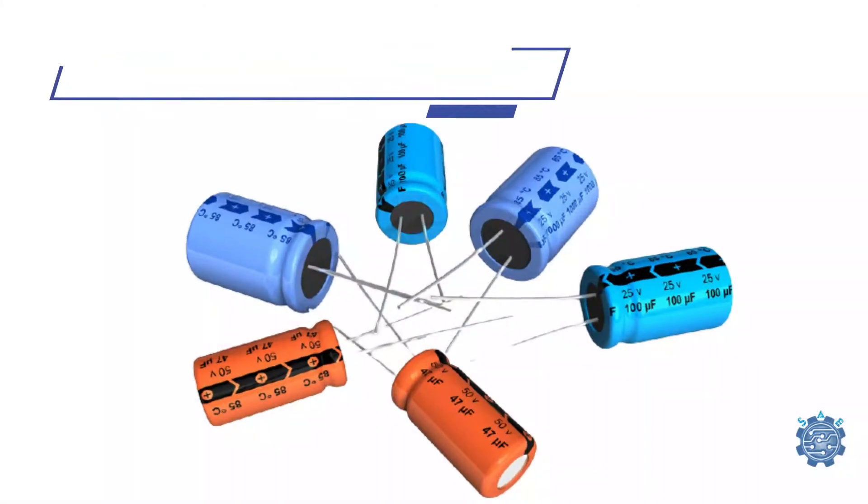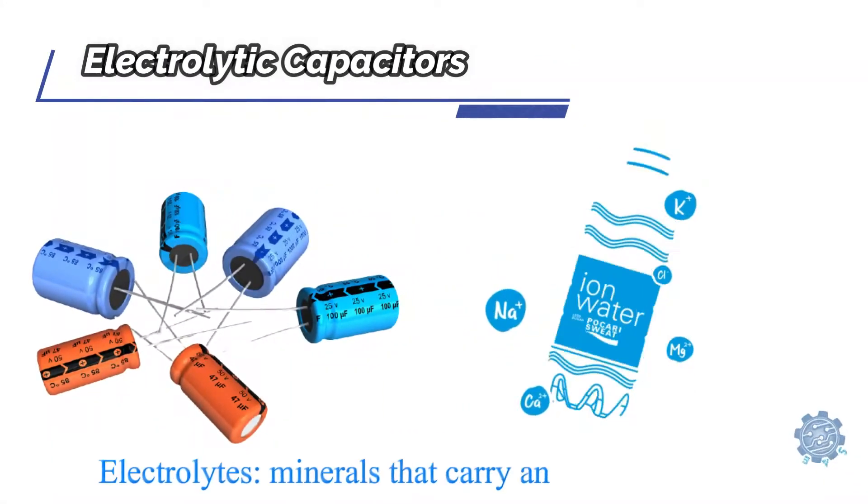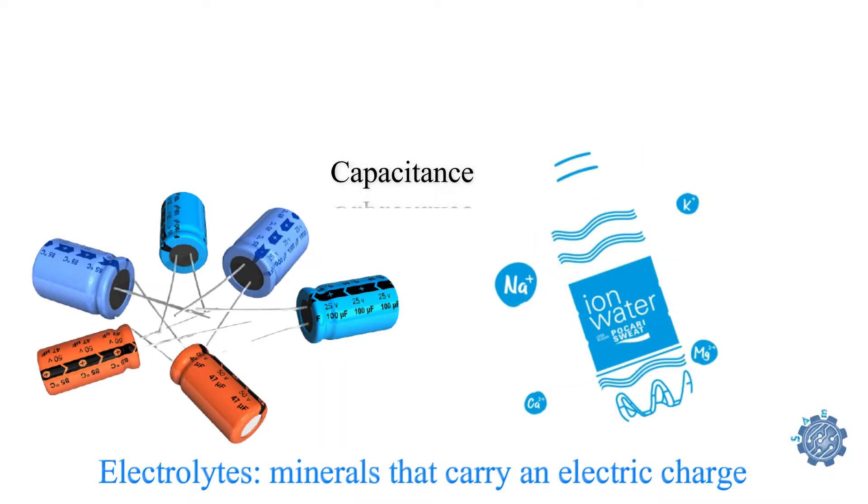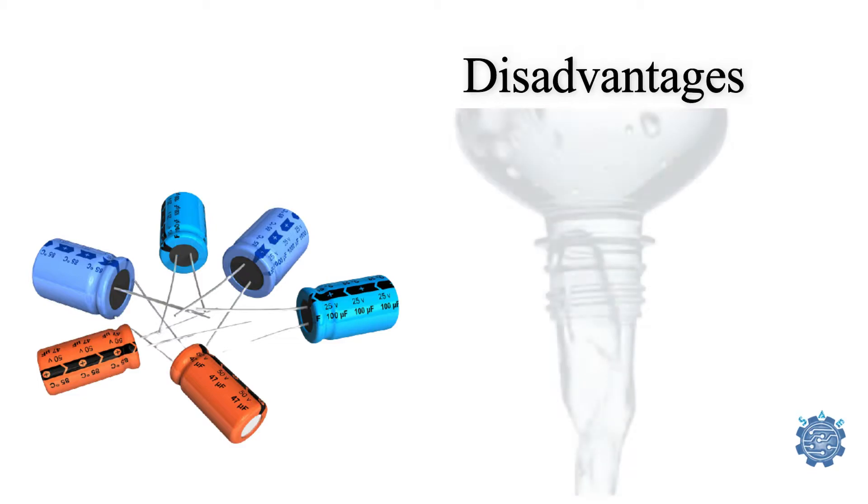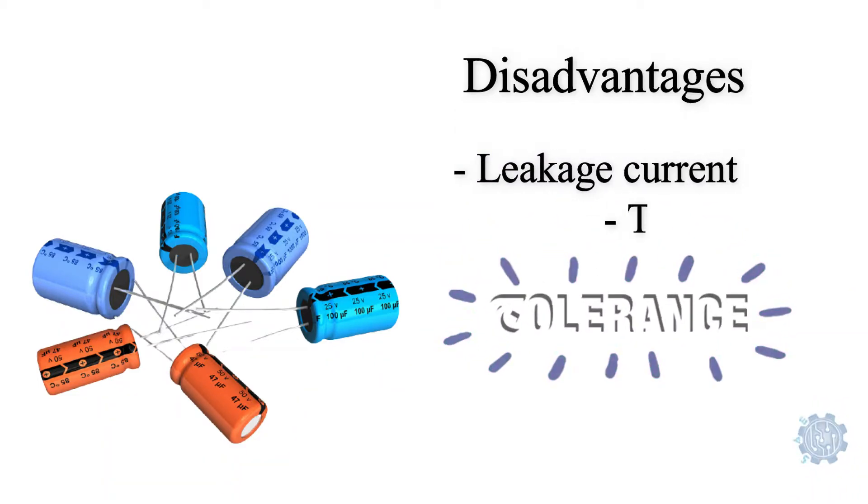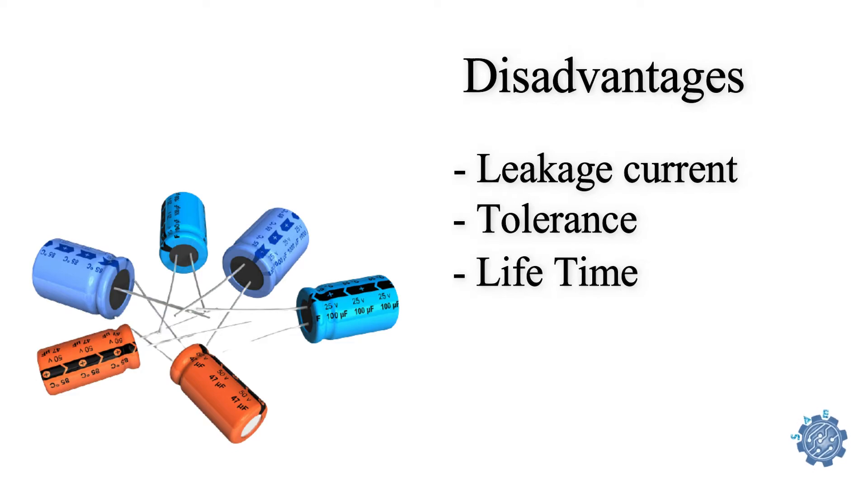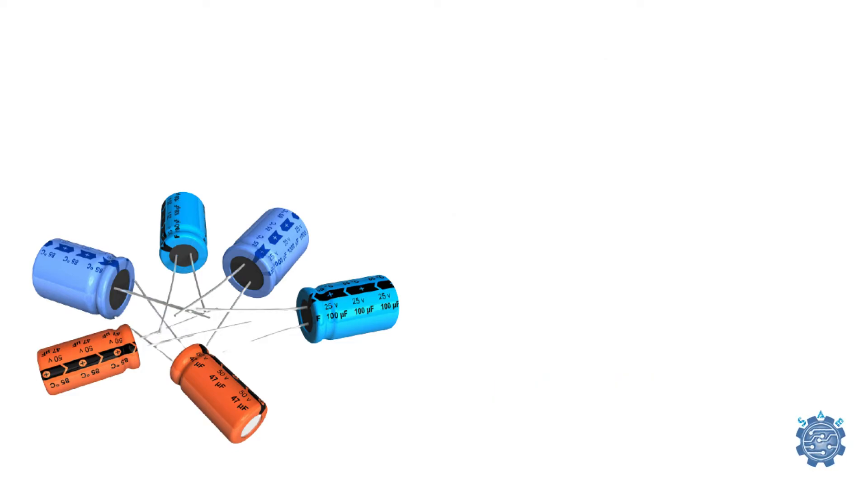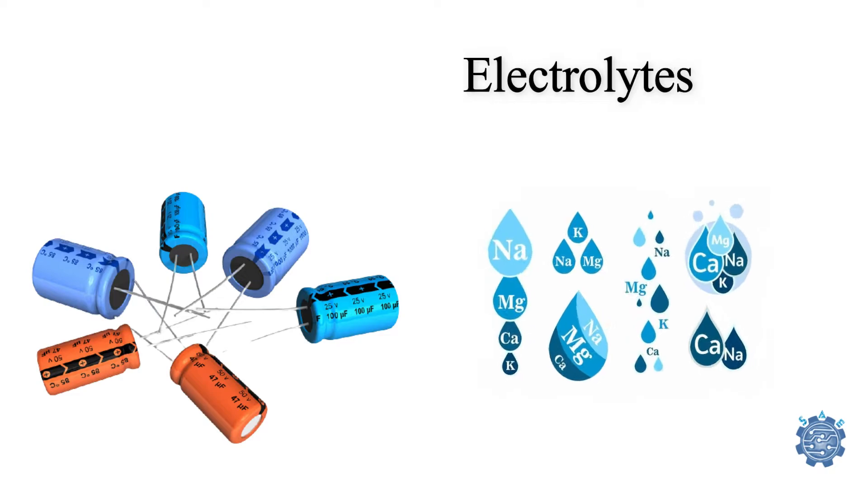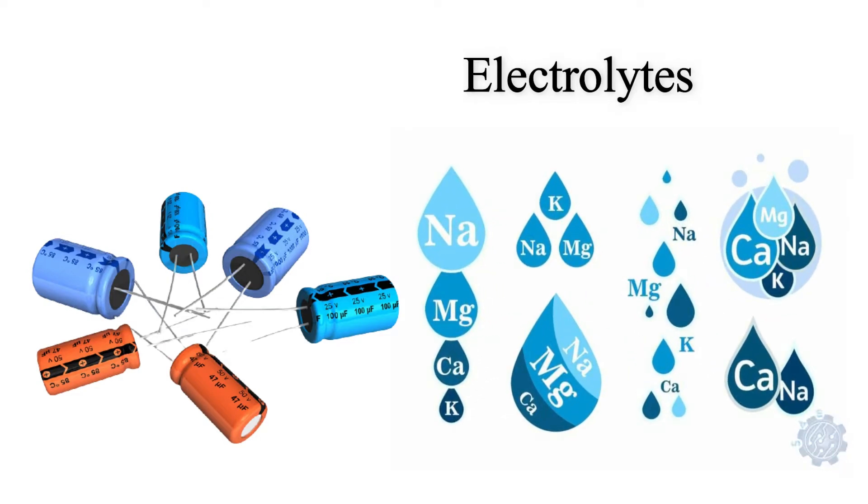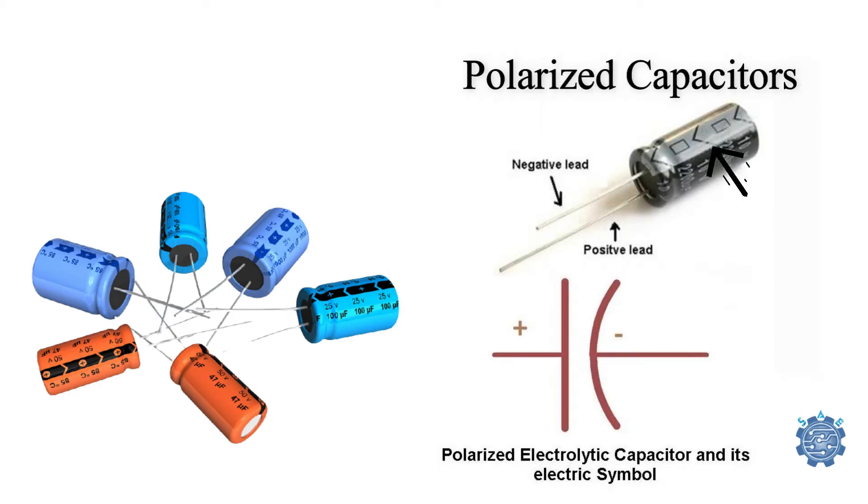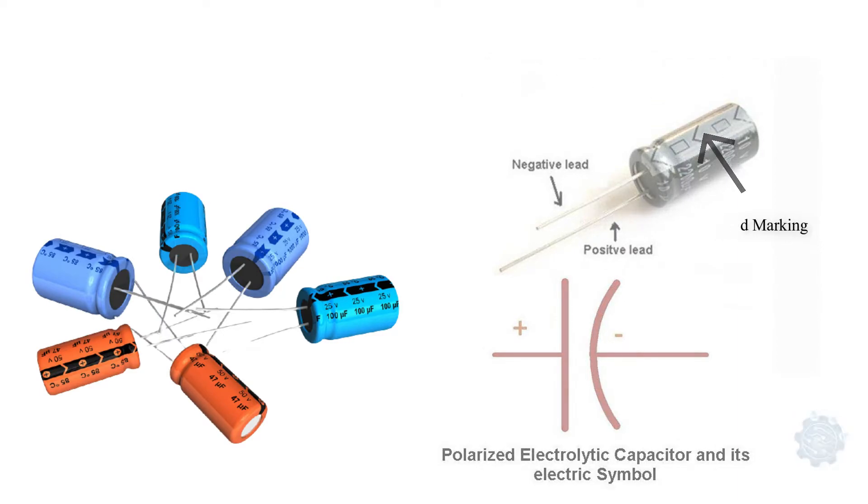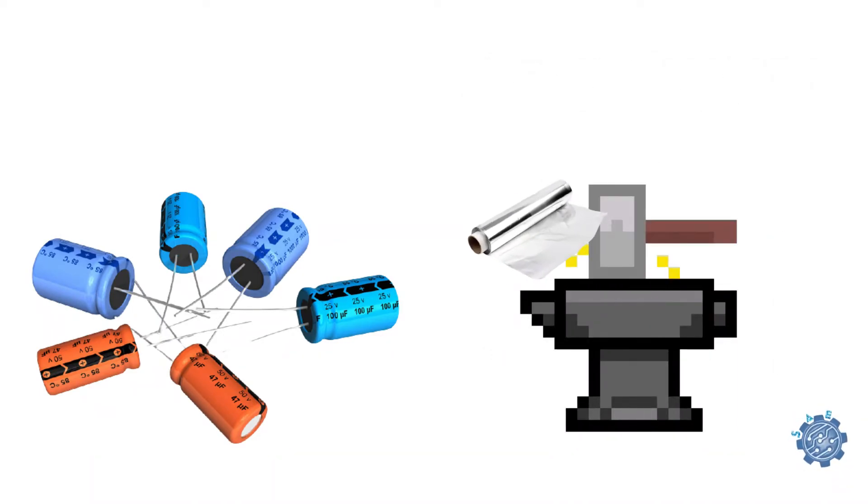Electrolytic capacitors use an electrolyte to achieve a larger capacitance, but because of this they have also some disadvantages: large leakage currents, value tolerances, lifetime, and equivalent series resistance. The electrolyte is a gel or a liquid with a high concentration of ions. These capacitors are polarized and the negative pin is marked with a minus or a band. They are usually made of aluminum or tantalum.